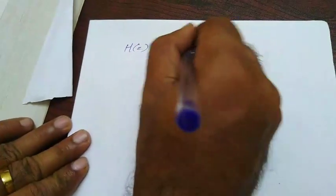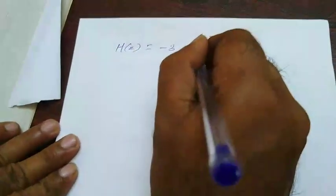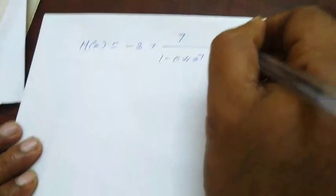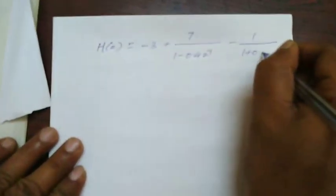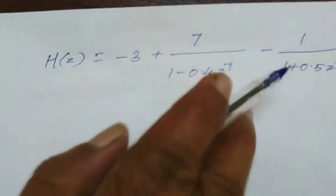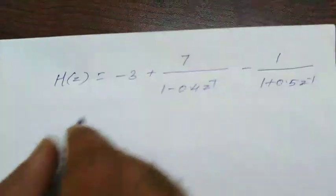Therefore, we will get h of z is equal to minus 3 plus a value is 7, so 7 over 1 minus 0.4 z inverse and b value is minus 1, so minus 1 over 1 plus 0.5 z inverse. Now, this is in terms of constant, then constant divided by poles, again constant divided by poles format.